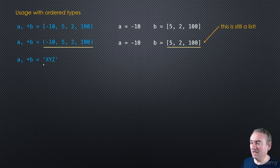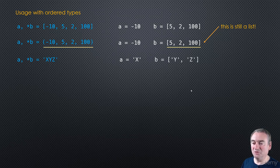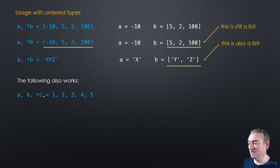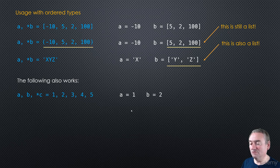A string is an iterable as well. When we write this, A gets the first character and B will be ['Y', 'Z'] — it gets unpacked into a list. The following also works: you don't have to have just one element before the star. You can say unpack the first element, then the second element, and then the rest — so you can read *C as 'the rest'. So unpacking a tuple this way gives A = 1, B = 2, and C = [3, 4, 5] as a list.